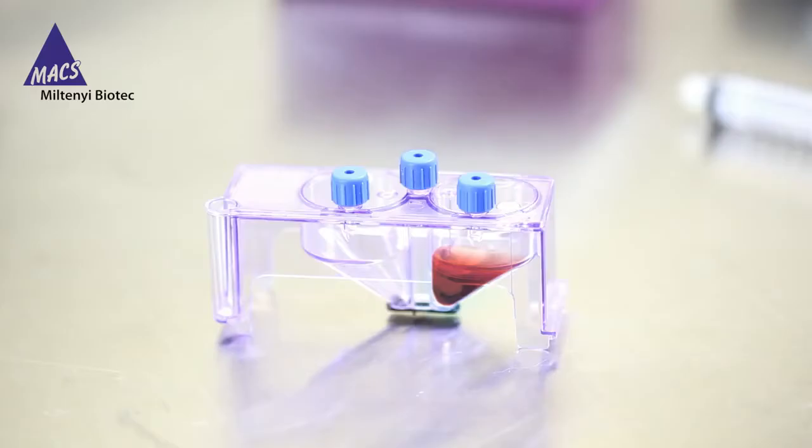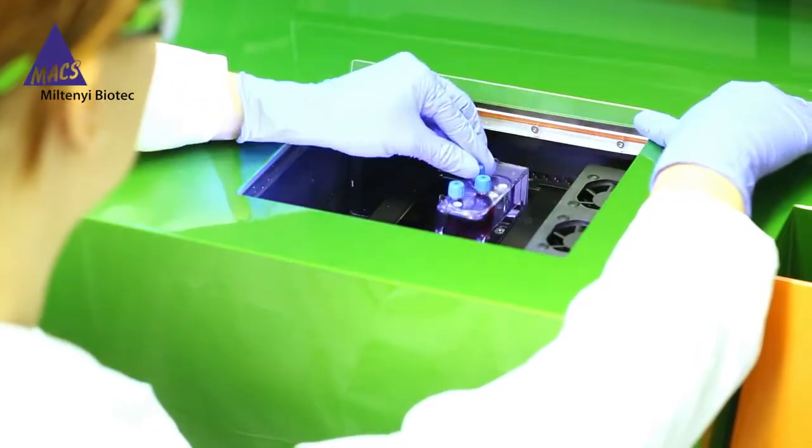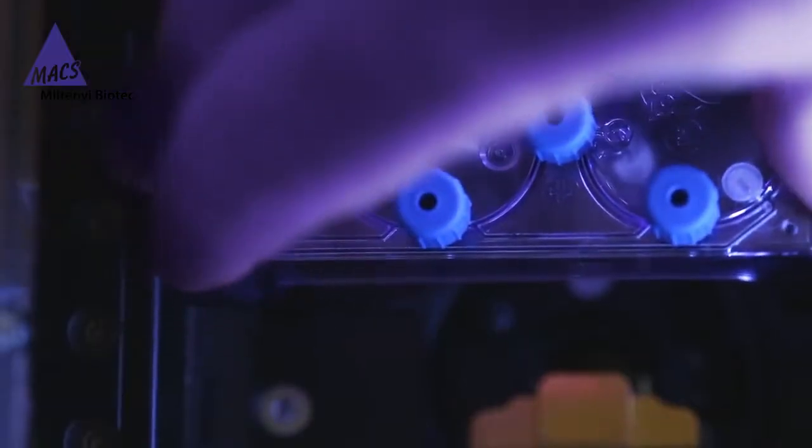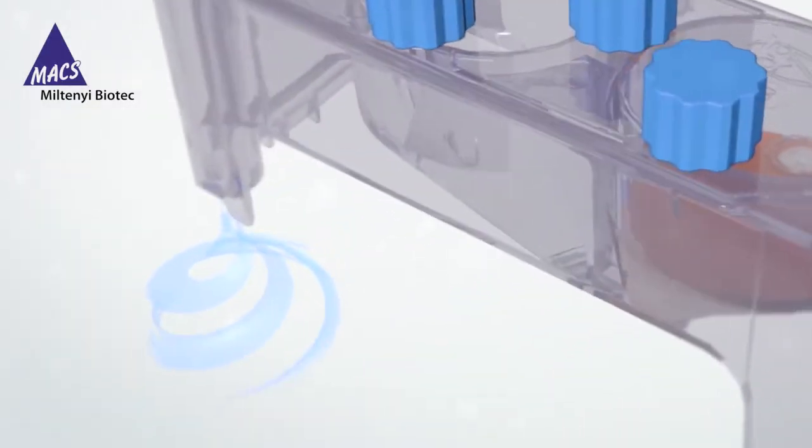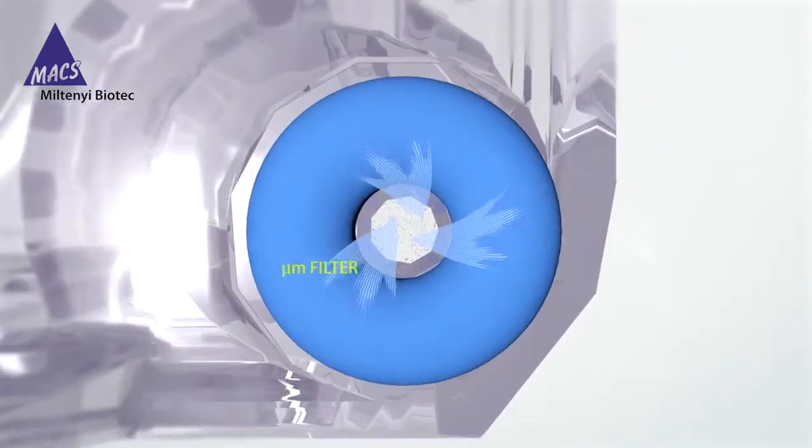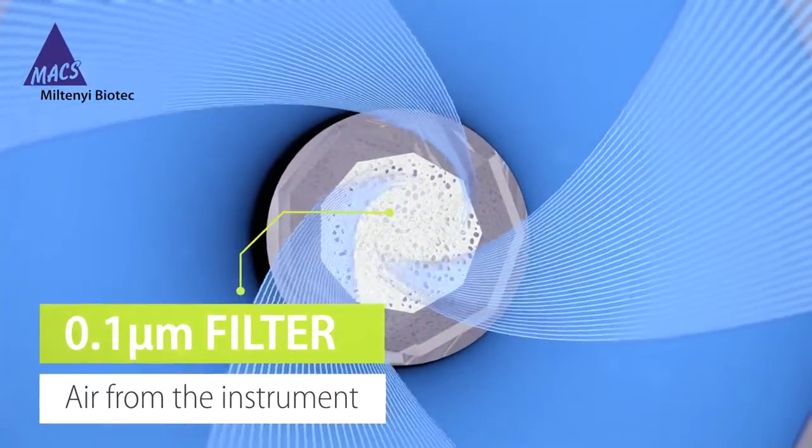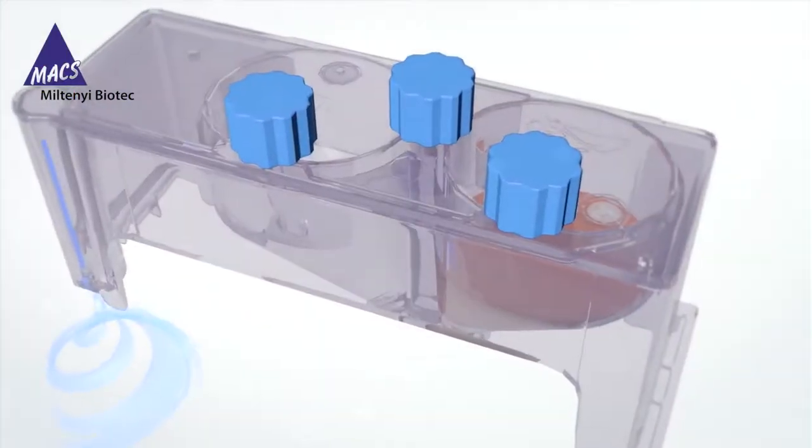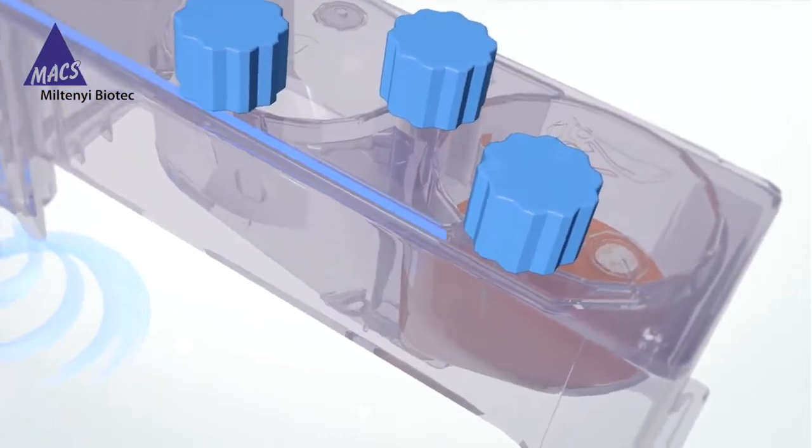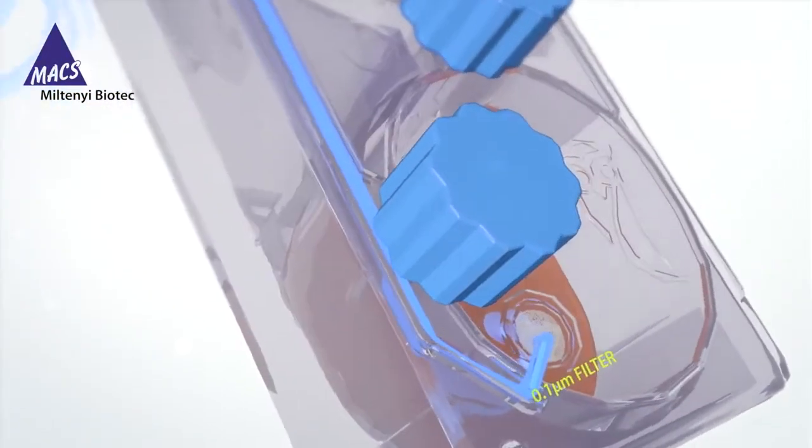After loading the sample into the input chamber, the cartridge is placed inside the instrument. At the beginning of the sort process, pre-filtered air coming from the instrument enters through a 0.1 micrometer filter at the bottom of the cartridge. The air then moves through an air channel and finally enters the input chamber through another 0.1 micrometer filter.